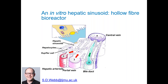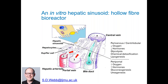This means replicating zonation of the liver, where different parts of the sinusoid have different oxygen, pH and hormone gradients. In the perivenous region closer to the central vein, we have different concentrations of oxygen and hormones compared to the periportal region. These are elements which are critical but haven't been able to be developed in in vitro models so far.